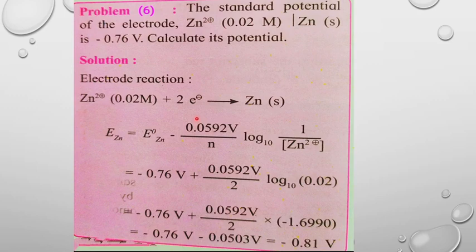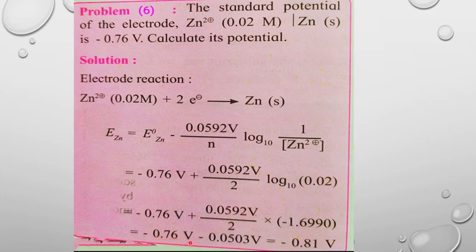Calculating: log(1/0.02) = log(50) = 1.6990. So E = −0.76 − (0.0592/2) × 1.6990 = −0.76 − 0.0503 = −0.8103 V. The calculated electrode potential of zinc is approximately −0.81 V.